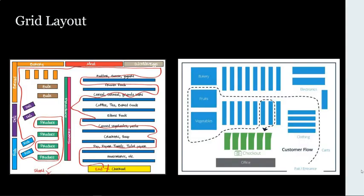They want to be able to easily locate their products and make their purchases quickly. Looking at a few examples, when you see these two images on screen, hopefully you said supermarkets. You may have also said full-line discount stores and supercenters. Both full-line discount stores and supercenters do use a grid layout, but they typically also incorporate another type of layout. Supermarkets are the type of retailer that will use the grid layout most frequently.